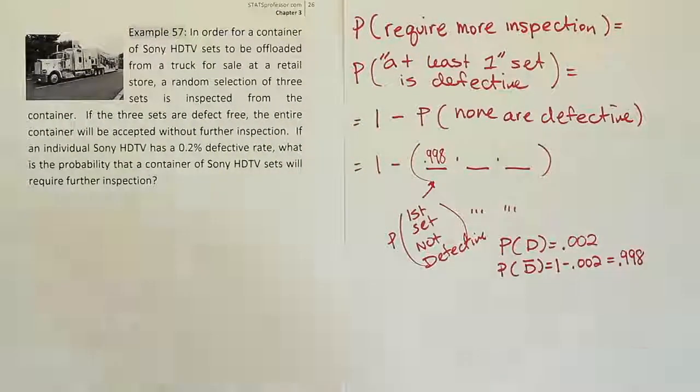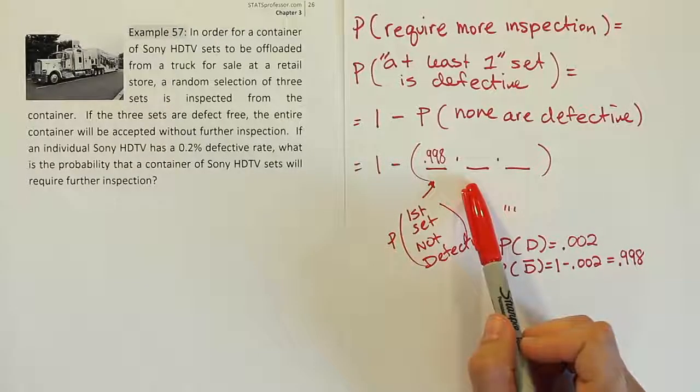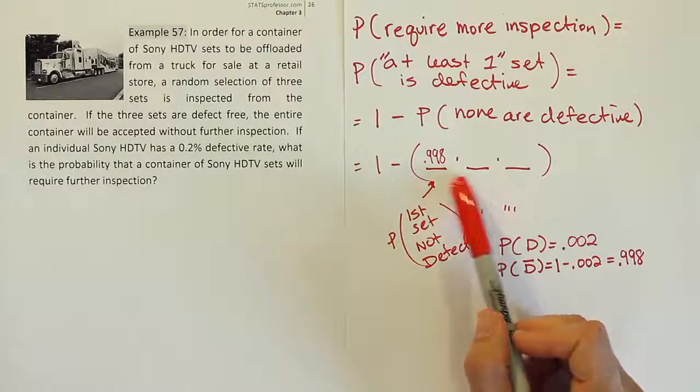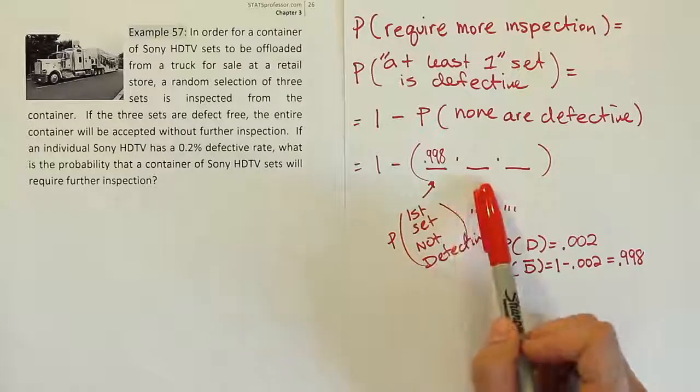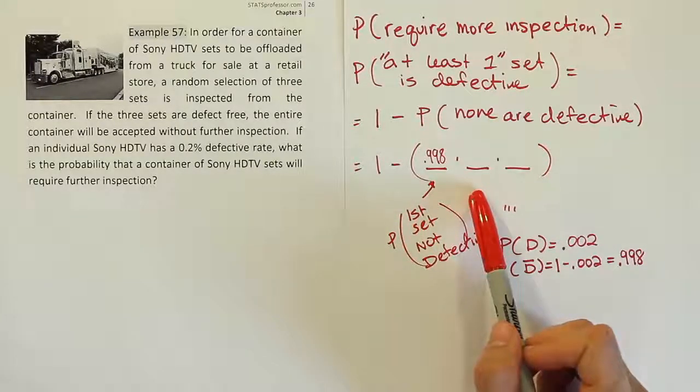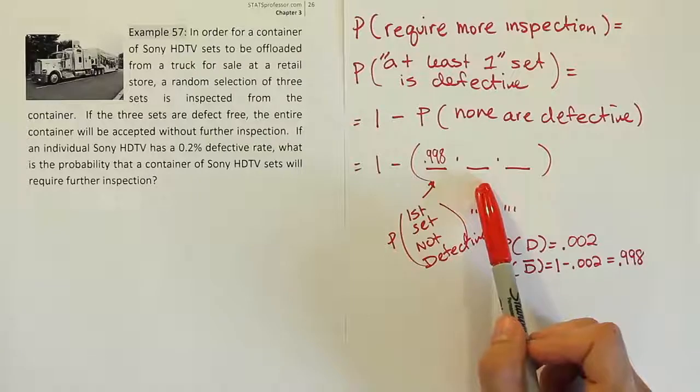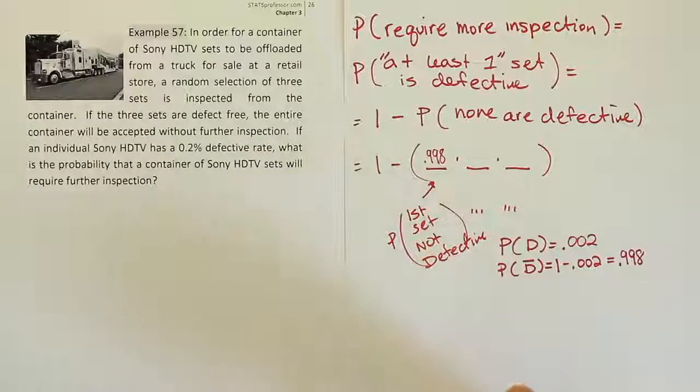Now, some of you may be wondering, well, when I go to the second set, isn't this a dependent case? Because I removed one set from the truck, and now I'm going back in. If one set has already been looked at, there are going to be fewer sets in the truck. So I should have to reduce the fraction type of thing like we did before. Well, there's a little rule, which I think you might have seen in the notes, that said that